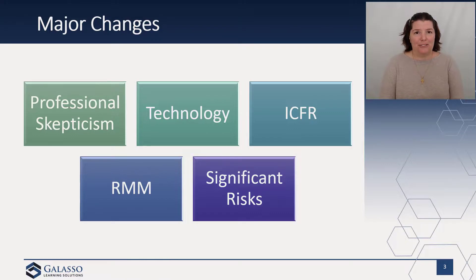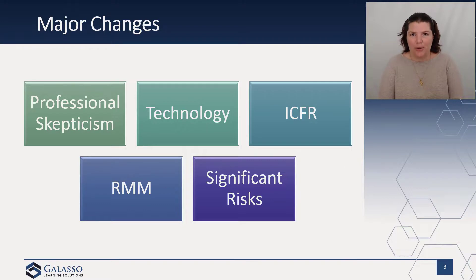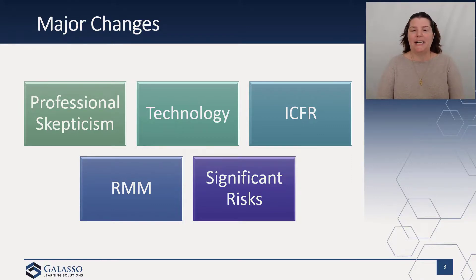My personal favorite: I think we have some common sense coming back to the risk assessment standards. The problem was really the third-party practice aids. It now has an explicit statement that if you have control risk at maximum — meaning you haven't tested the operating effectiveness of the internal controls — then inherent risk equals your RMM. So if you assess maximum or high for your control risk, then inherent risk equals your risk of material misstatement. That's how it was for a long time, but a few years ago most practice aids moved to low/high/moderate. This says — no, let's go back to the basics: low, high, low.